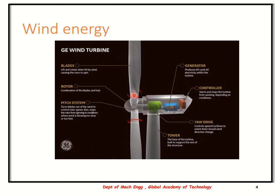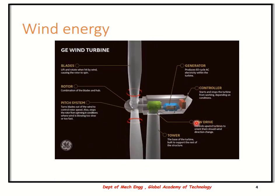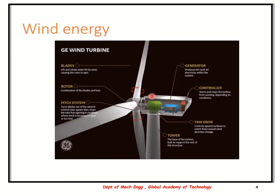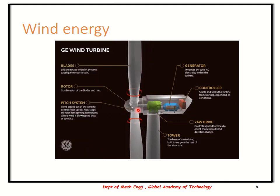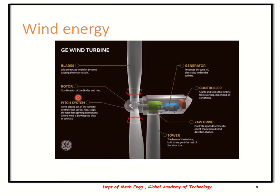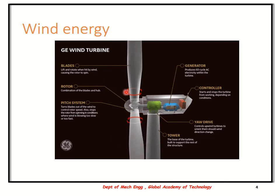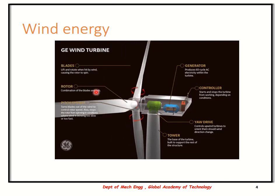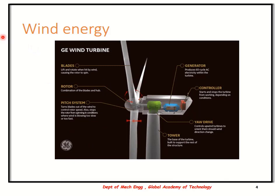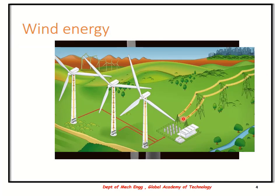This nacelle has a movement called a yawing mechanism, meaning it moves either to the left or to the right with the help of a sensor, depending on the wind direction. Once the power is generated, it is transmitted to the switch yard and then to the places where it is required.